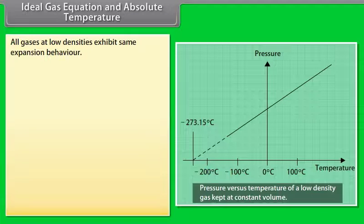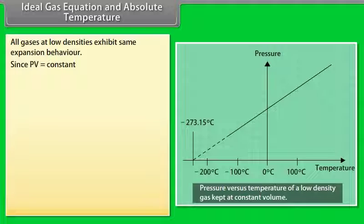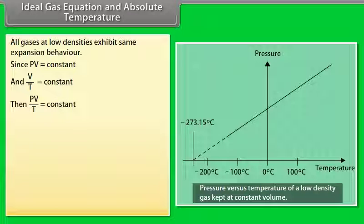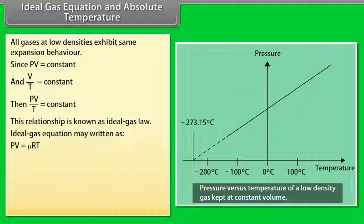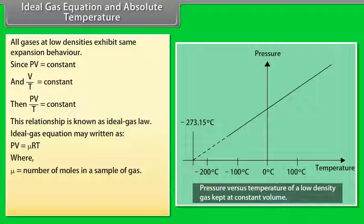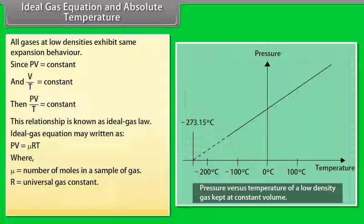All gases at low densities exhibit the same expansion behavior. Since PV = constant and V/T = constant, PV/T is also constant. This relationship is known as the ideal gas law. The ideal gas equation may be written as PV = μRT, where μ is the number of moles in a sample of gas and R is the universal gas constant.